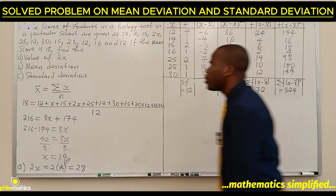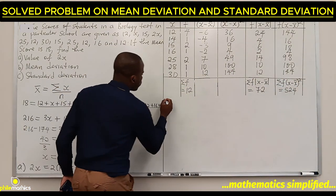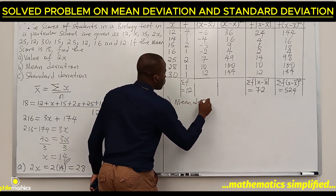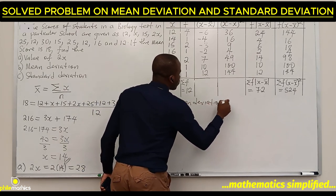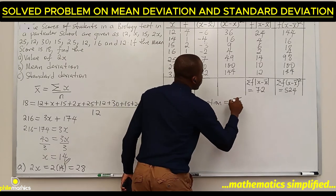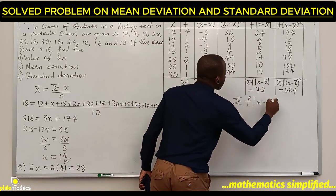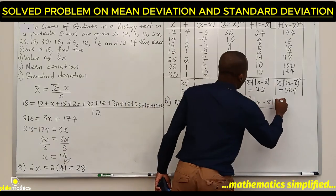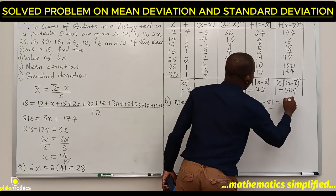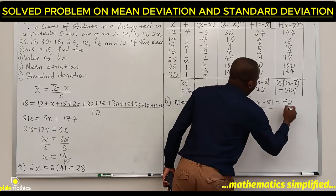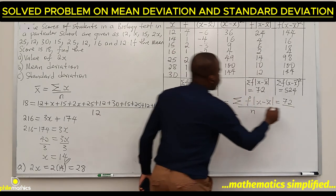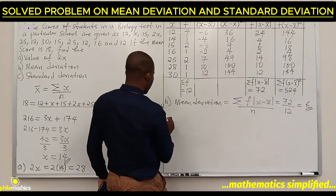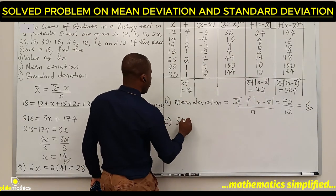To find the mean deviation, the formula says summation of f times x minus x-bar over n. This should be 72 over 12, which equals 6.